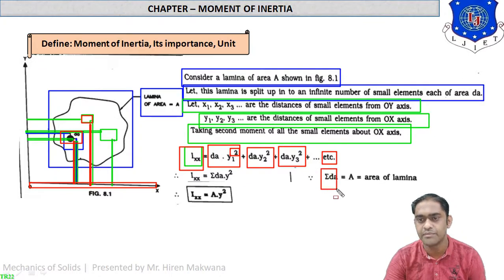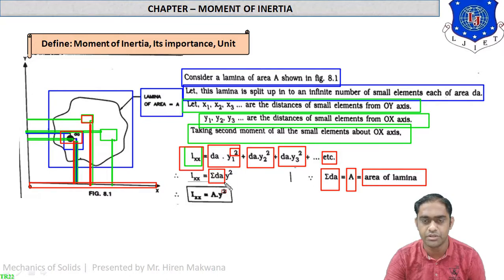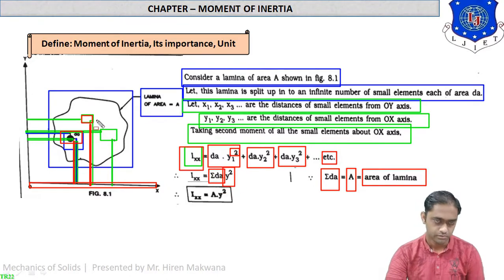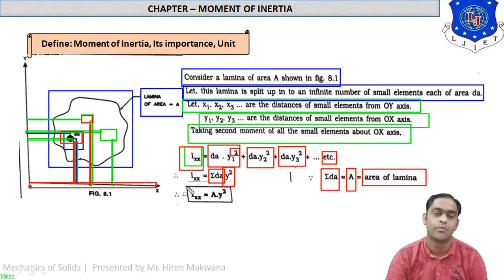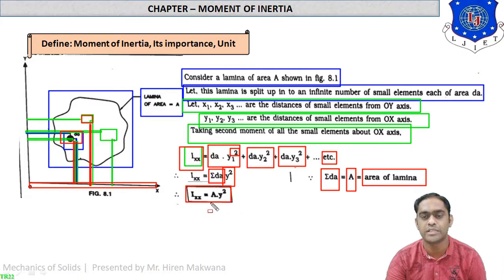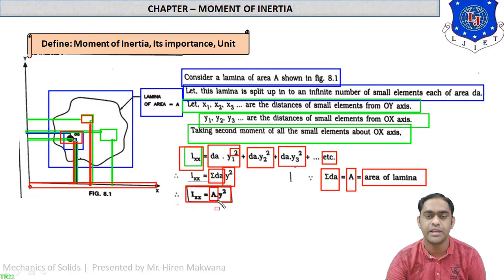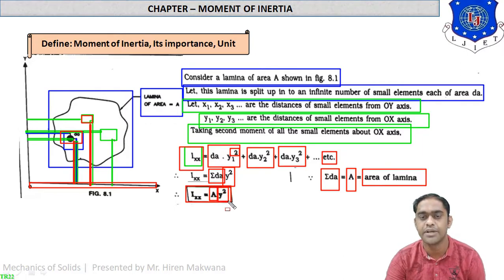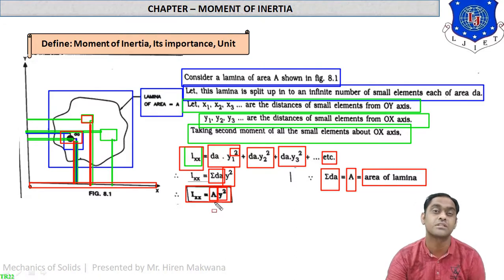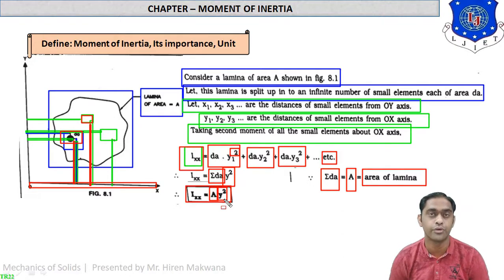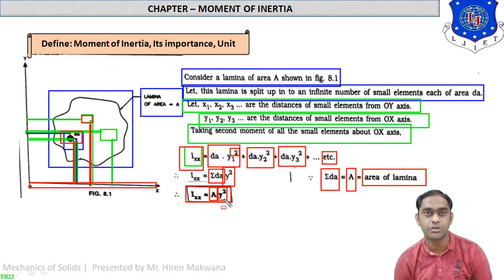By taking the algebraic sum, sigma dA denotes total area A of the lamina. So IXX = sigma dA × y², which is ultimately area × y². Now, what is the unit? The unit of area is m², mm², or cm². Y is a distance, and here it is squared. So the unit is m² × m² = m⁴. We use smaller units like cm⁴ or mm⁴. These are the units of moment of inertia.